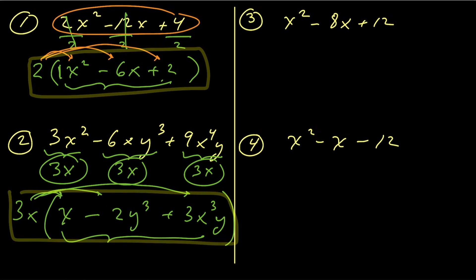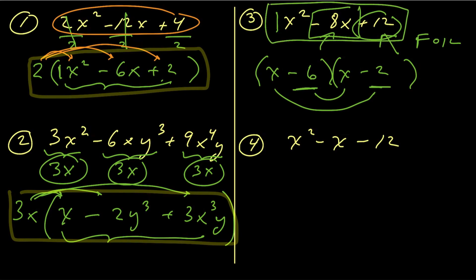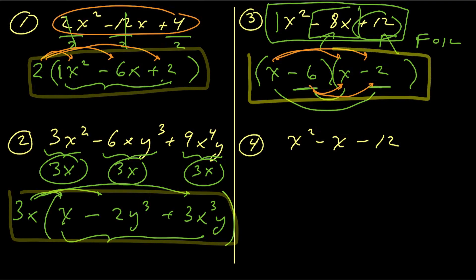For number 3, we have a trinomial with leading coefficient 1. These are easy to factor — you just ask yourself what two numbers multiply to 12 but add to negative 8. The answer is negative 6 and negative 2: a negative times a negative gives positive 12, and negative 6x plus negative 2x adds up to negative 8x. So we've factored it. You can verify using FOIL. Can we factor further? No — that's our final result.